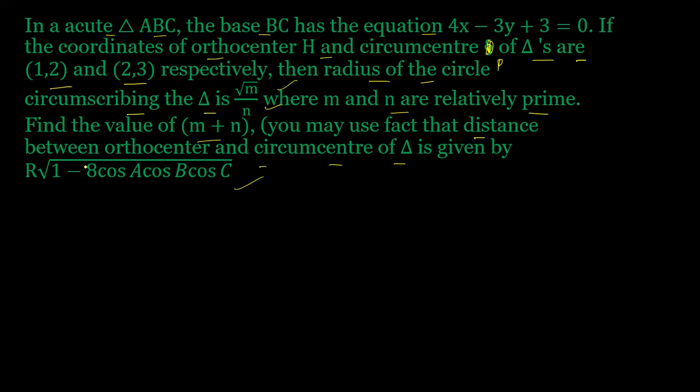So what is the equation here? 4x minus 3y plus 3 is equal to 0. So this is our A, this is B, this is C, and this is our equation here. And here I have our circumcenter.